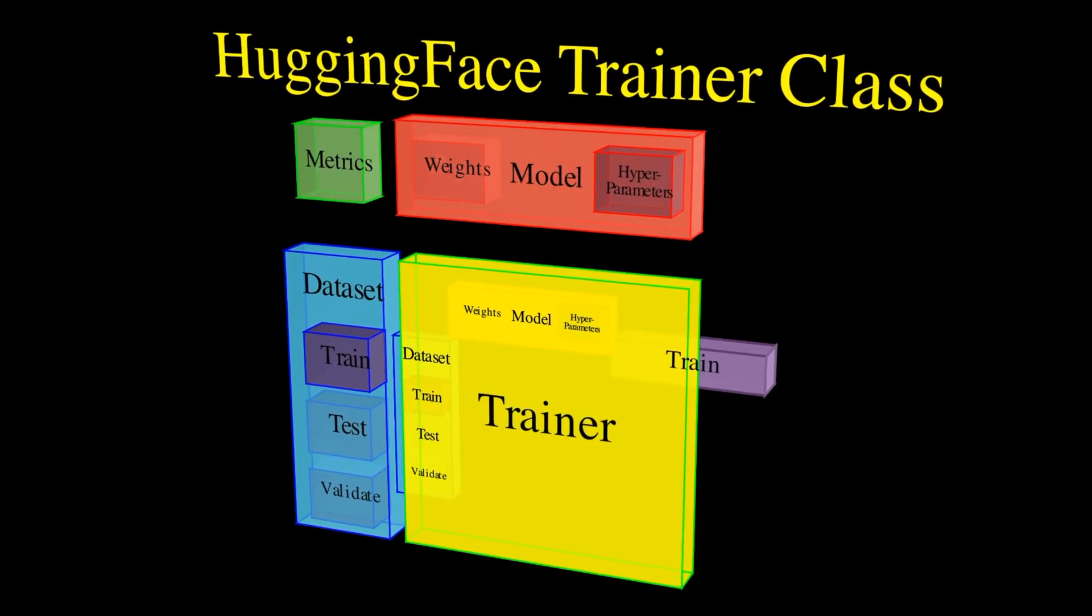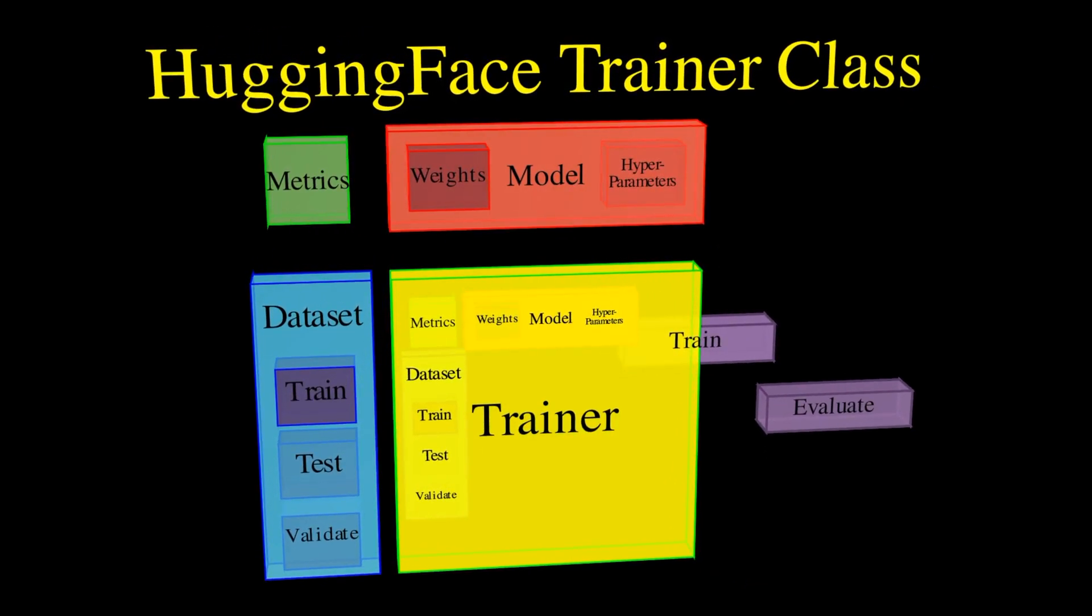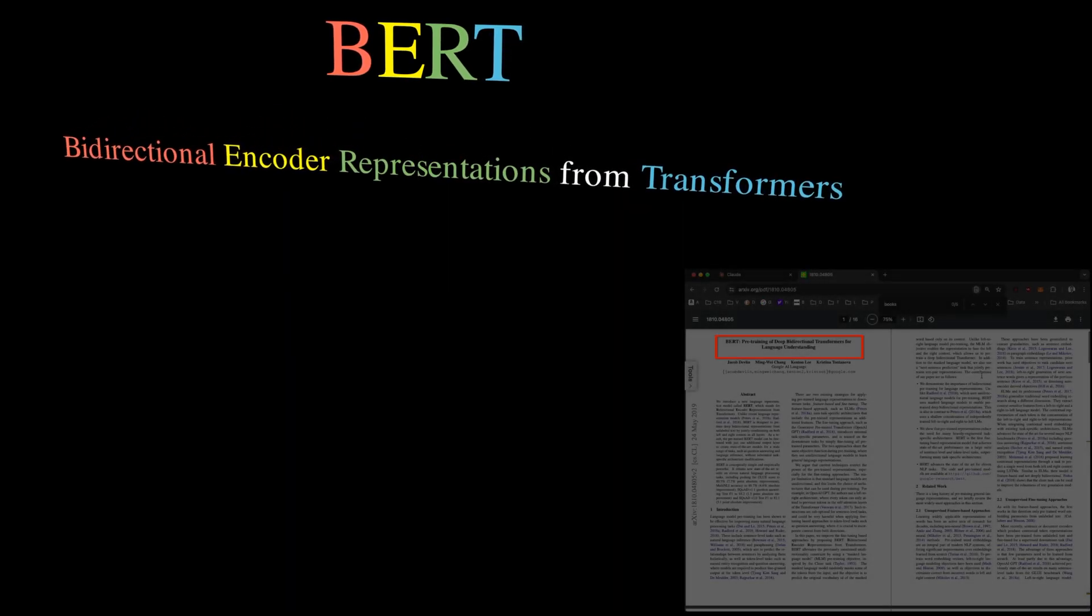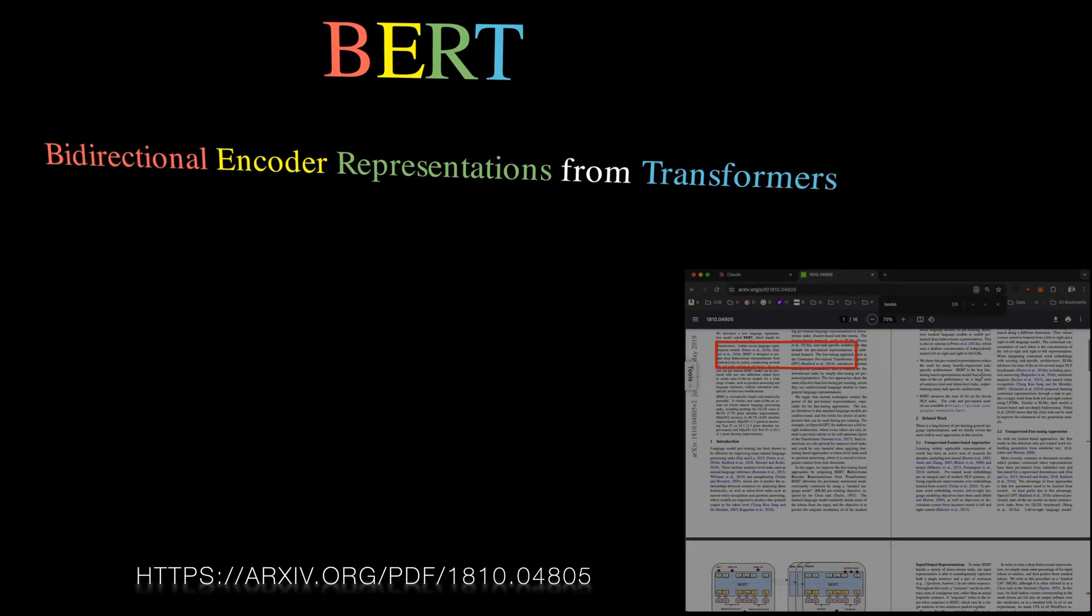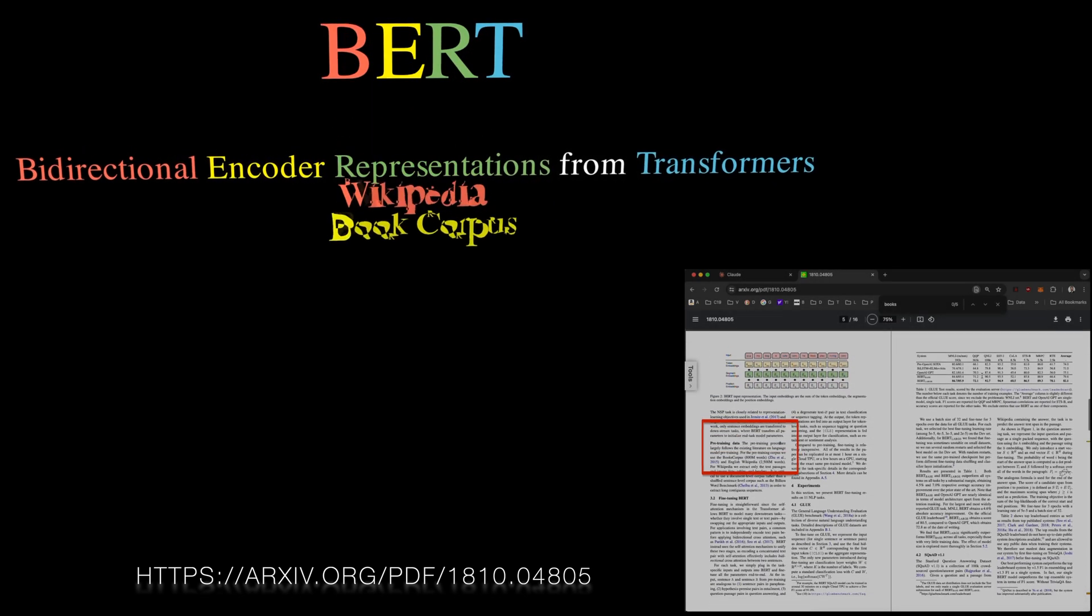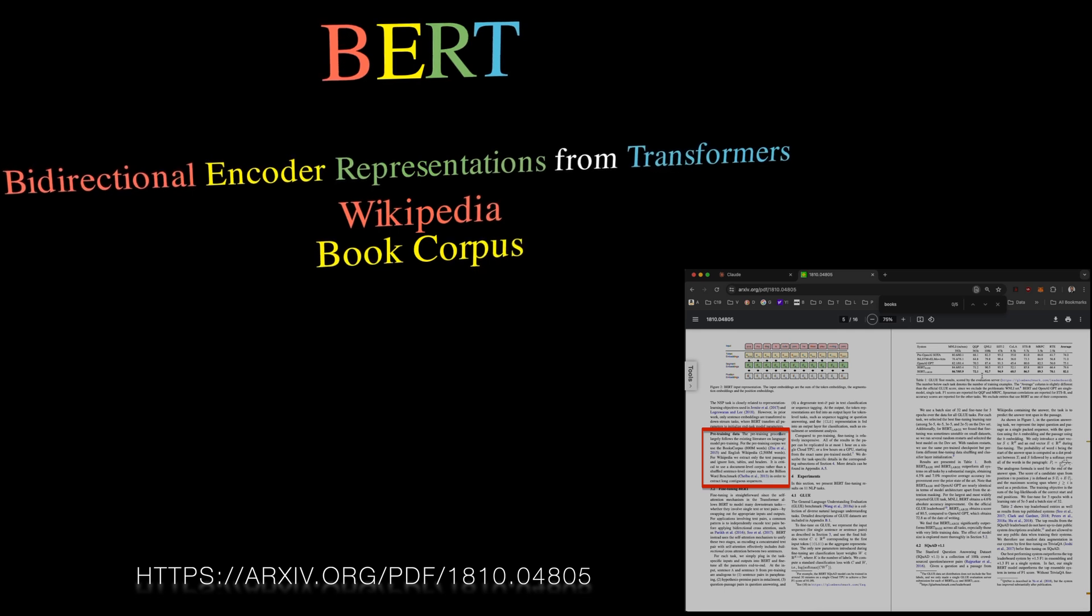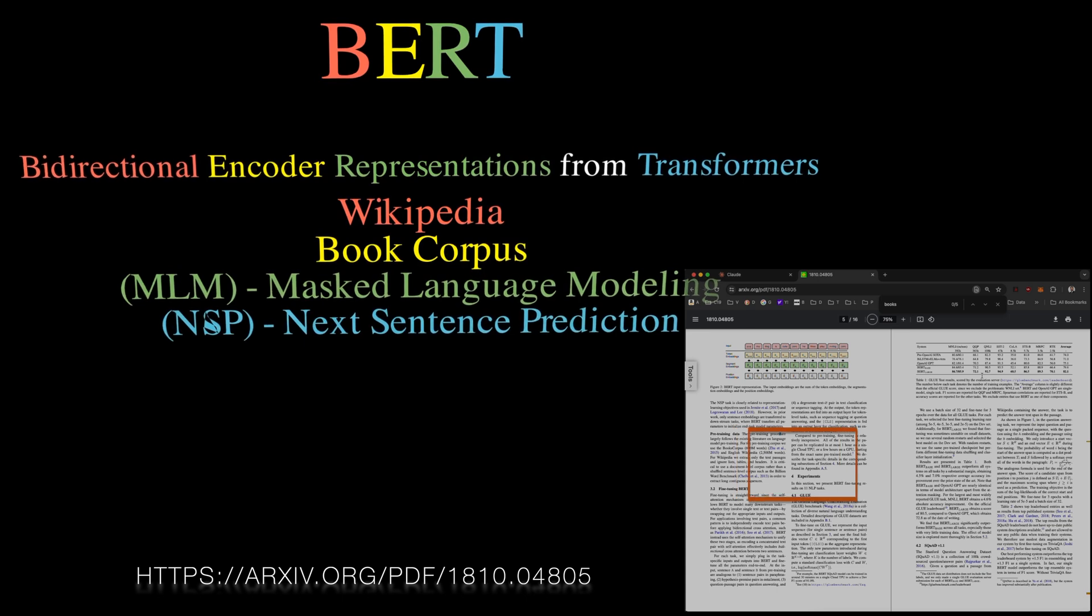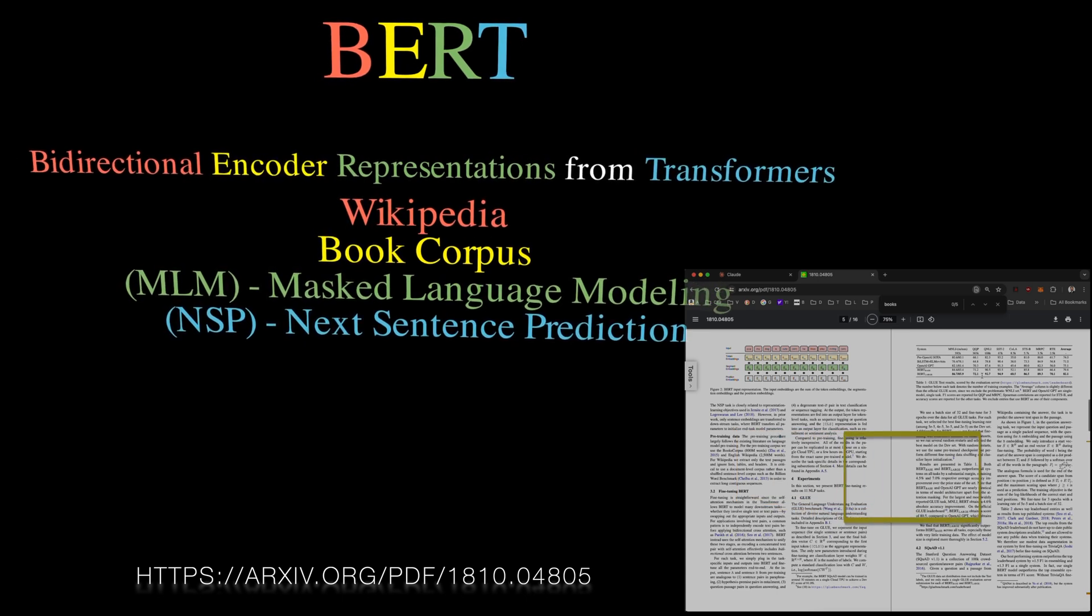In the last video we used an example of fine-tuning a version of the BERT model. This particular BERT model is based on the transformer model developed by Google. It stands for bi-directional encoder representations from transformers. The key innovation of BERT is that it's pre-trained on a large corpus of unlabeled text including the entire English Wikipedia and the book's corpus.